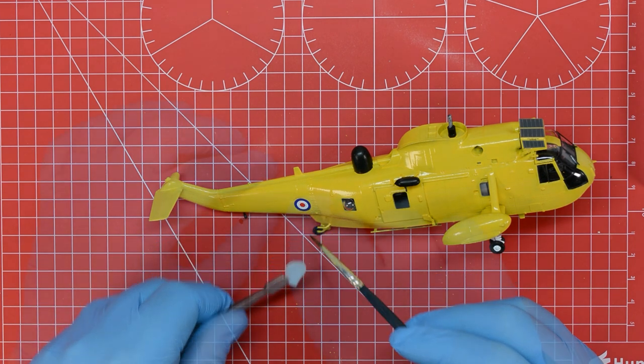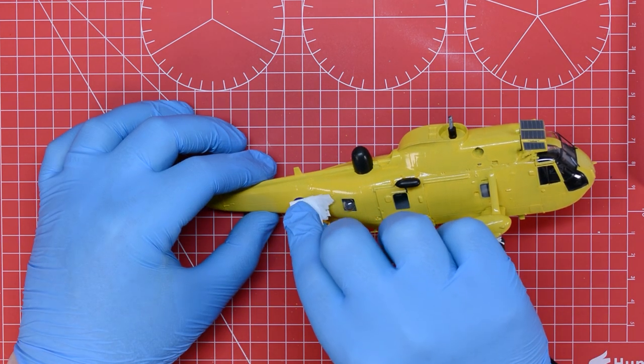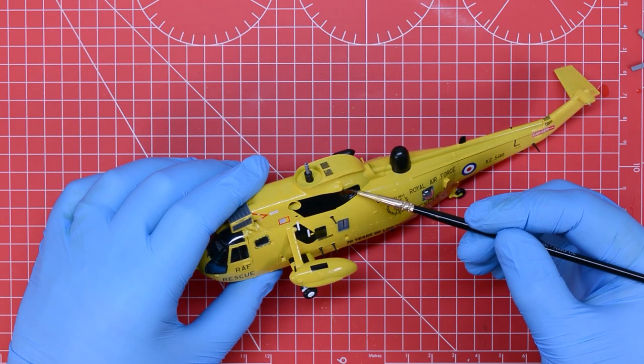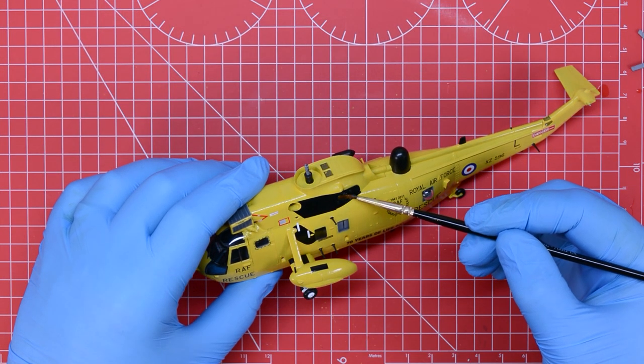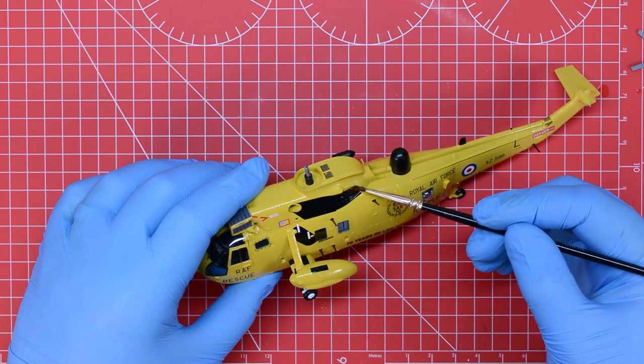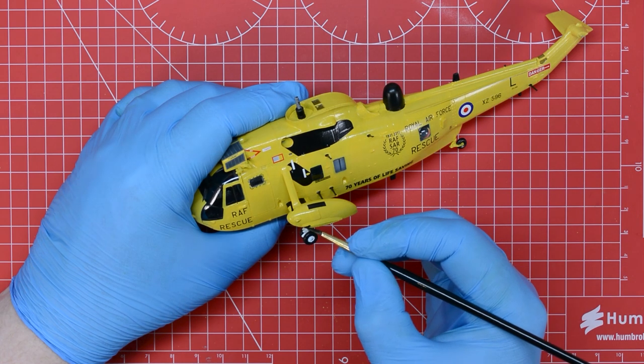We now need to add the rest of the transfers in line with the diagram on the back of the box and because this isn't a starter set there are quite a few so we're not going to show them all in these video but the process for application was the same even on the larger ones which will dry and settle down over the surface details.